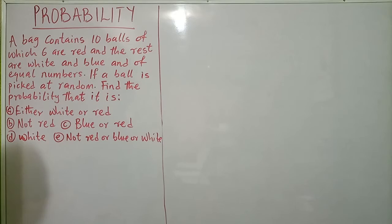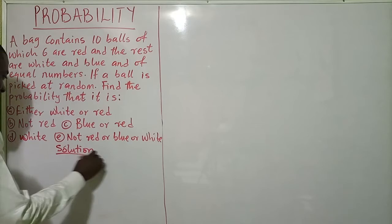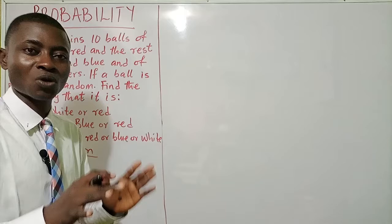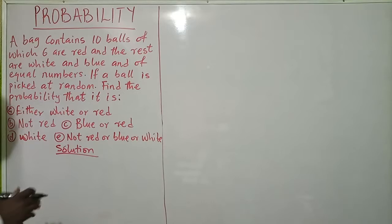Now how do we answer this? This is very simple. As usual, the solution — whenever you are solving a question on probability, it's very important to first bring out your sample space or possible outcomes. Bring all of them out and specify them first, then bring out all your expected outcomes before starting to answer the question.